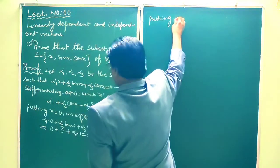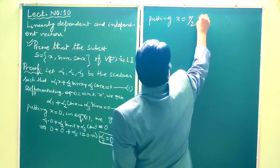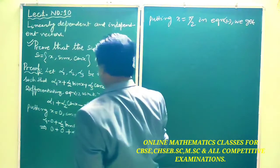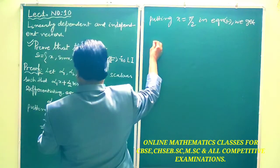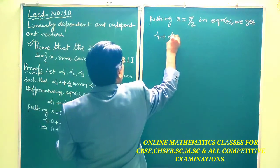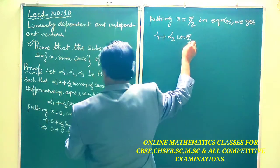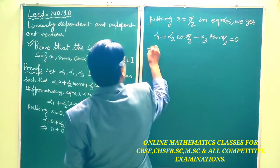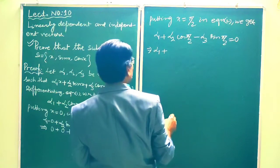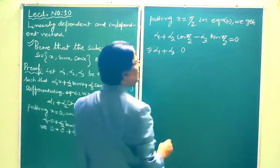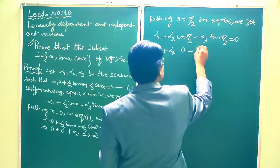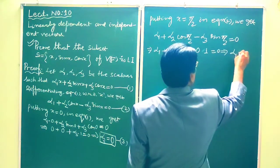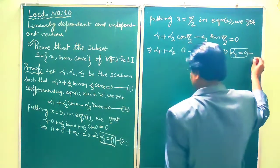Putting x = π/2 in equation 2, we get α1 + α2·cos(π/2) − α3·sin(π/2) = 0. Since cos(π/2) = 0 and sin(π/2) = 1, this gives α1 − α3 = 0. This is equation 4.